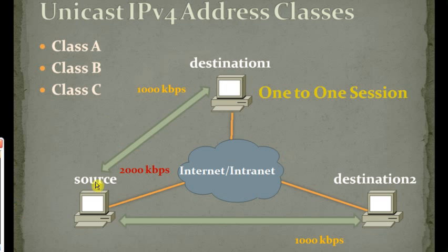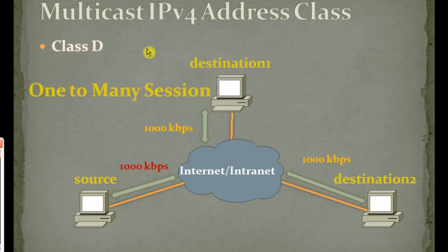So if the source machine needs to communicate with 1000 computers, it needs to establish 1000 sessions, each with its own bandwidth. You simply multiply the bandwidth of each session by 1000, or sum the bandwidth required by every session, and that's the total required bandwidth at the source machine. In order to avoid this kind of problem in some situations, you can go for multicast.